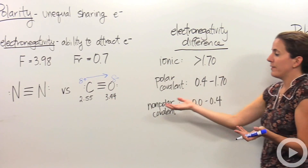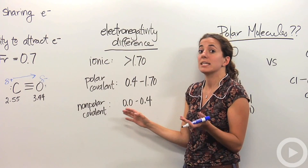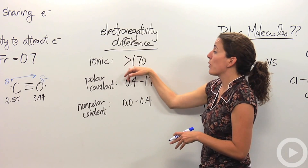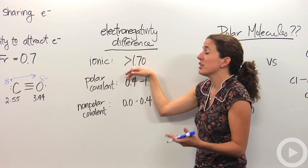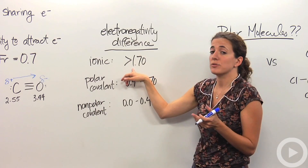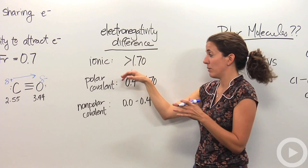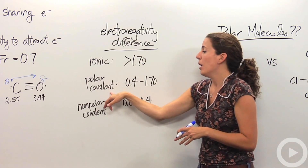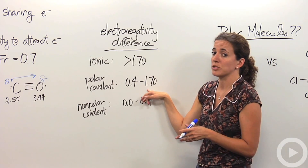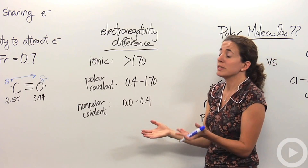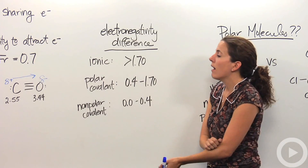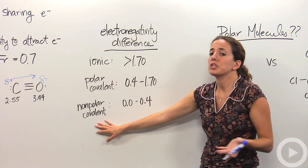How do we determine that a bond is polar? We have to look at the electronegativity difference — the difference between the electronegativity values of the two elements in the bond. If the value is greater than 1.7, it's actually going to be ionic, meaning they're not going to share those electrons anymore; one is actually going to take from the other. A polar covalent bond has a difference between 0.4 and 1.7. If it's nonpolar, the difference is up to 0.4, meaning the electrons are pretty much equally shared between the two atoms.